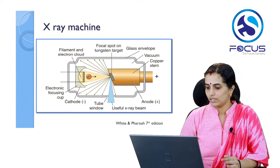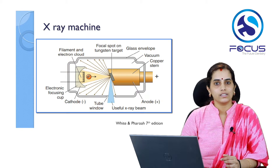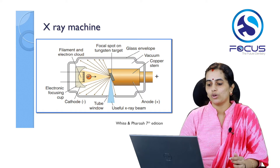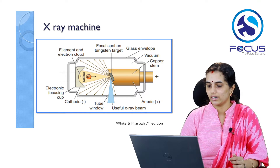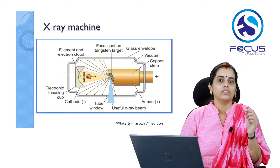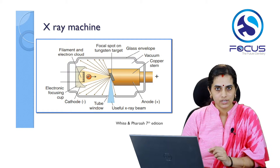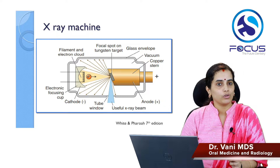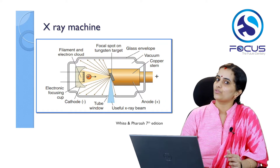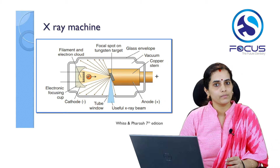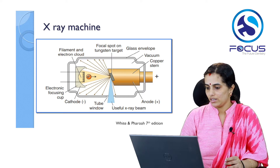The anode is positively charged and consists mainly of a rectangular-shaped tungsten target embedded onto a copper stem. The tungsten target is the area where the electron beam from the cathode strikes to produce X-rays. The point where the electron beam strikes is called the focal spot. The copper stem's role is to dissipate the heat generated at the focal spot.